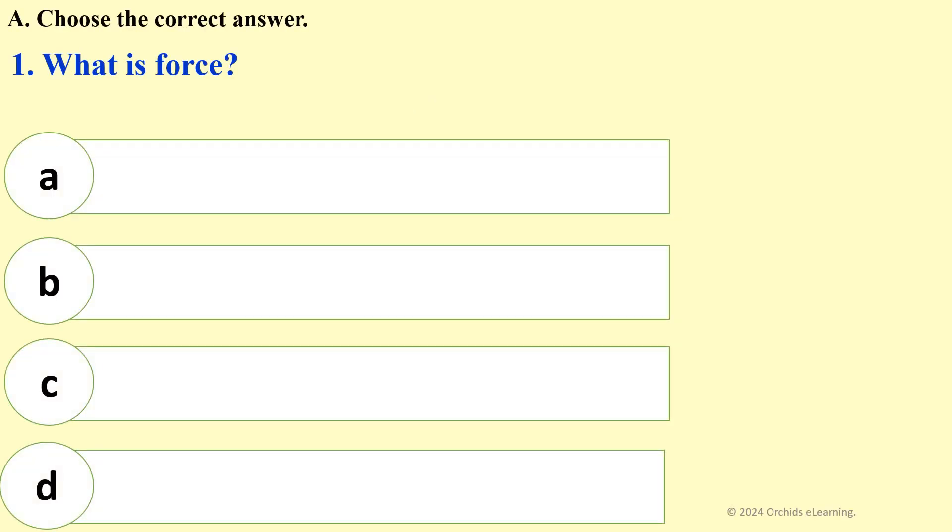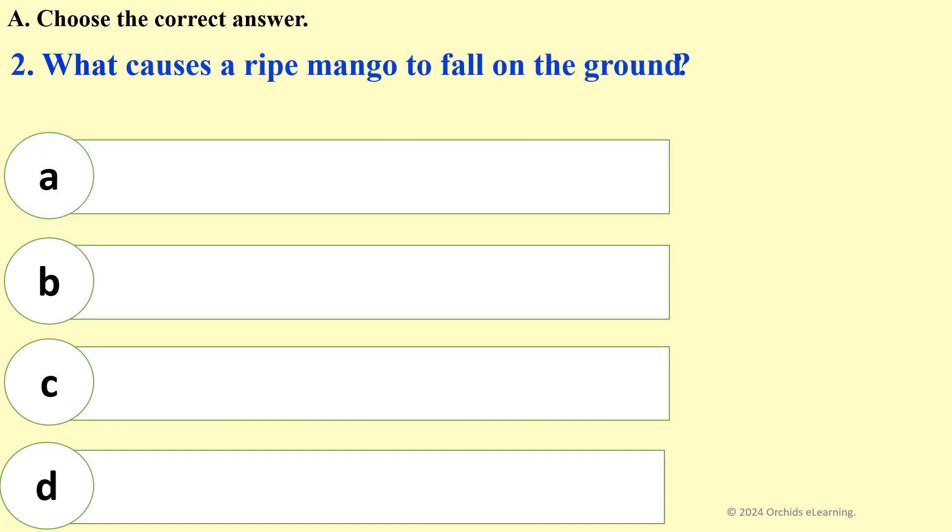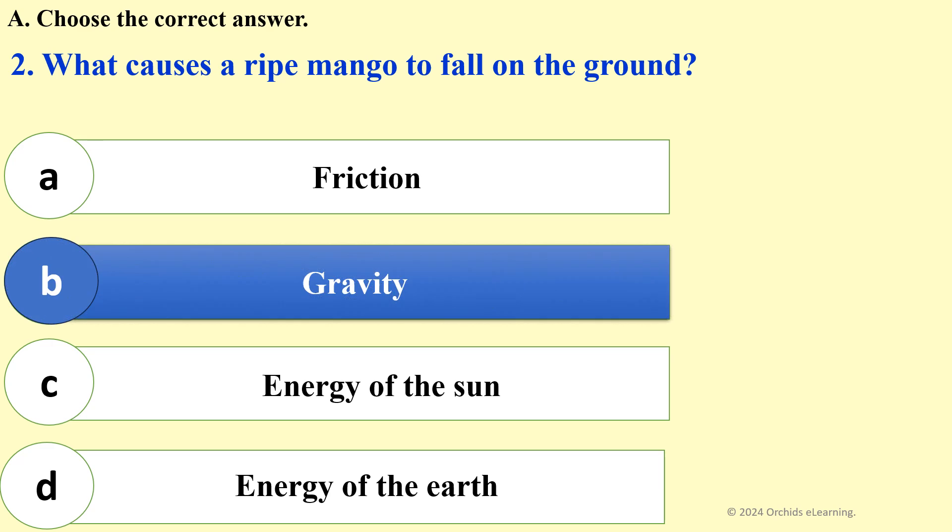Choose the correct answer. First Question: What is Force? A: act of pushing or pulling. What causes a ripe mango to fall on the ground? B: gravity.